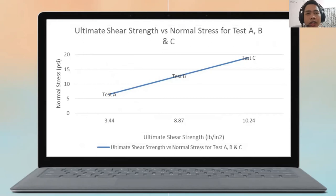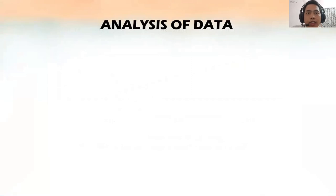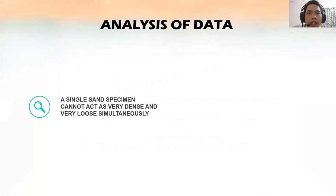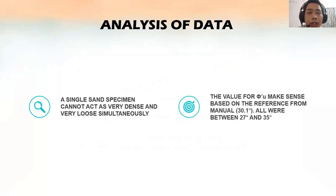This one is the ultimate shear strength versus normal stress for test A, B, and C. From this graph you can see that the highest is test C and the lowest is test A. What we can analyze from the graph, we can see that a single specimen, a single sand specimen, cannot act as a very dense and very loose simultaneously. But from the value of degree it makes sense because from the manual it was 30.1 degrees and from the calculation we get all the degrees between 27 and 35.